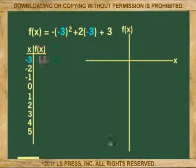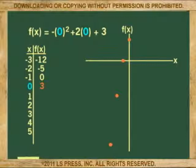At negative 2 is negative 5. At negative 1 is 0. At 0 is 3. At 1 is 4.